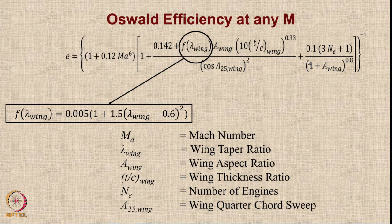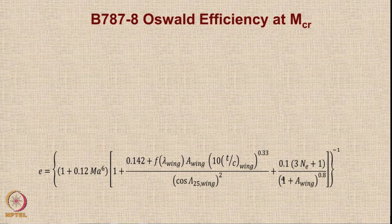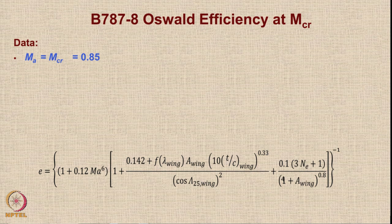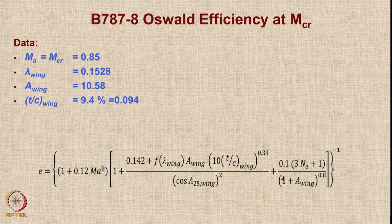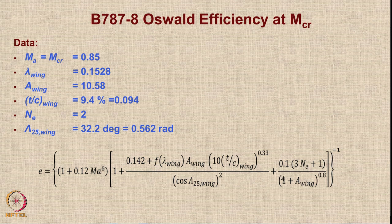The function F(lambda wing) is calculated in terms of the wing taper ratio lambda. Now let us calculate the values for Boeing 787-8. The cruise Mach number is 0.85, lambda wing (taper ratio) is 0.1528, wing aspect ratio is 10.58, wing T/C is 9.4%, number of engines is 2, and the sweep at quarter chord is 32.2 degrees.